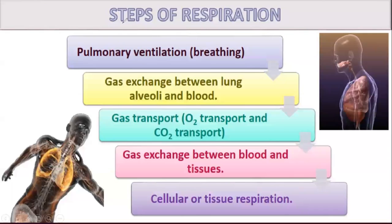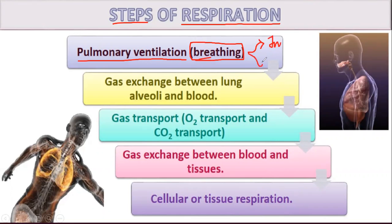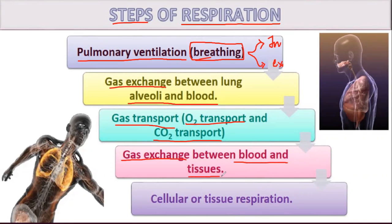The steps involved in respiration: first you have pulmonary ventilation, otherwise known as breathing, which consists of inhalation and exhalation. Next is gas exchange between the alveoli and blood — the exchange of oxygen and carbon dioxide. Then gas transport — oxygen transport and carbon dioxide transport. Then gas exchange between blood and tissues. Finally, cellular or tissue respiration, which is the breaking down of food with the help of oxygen.